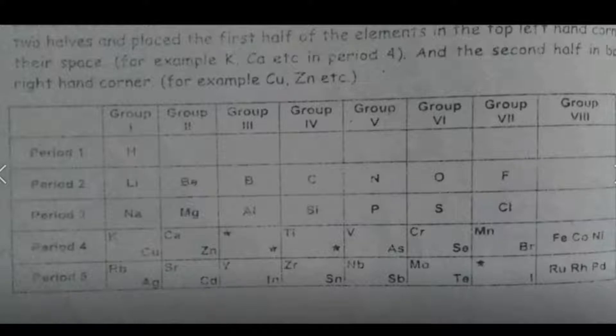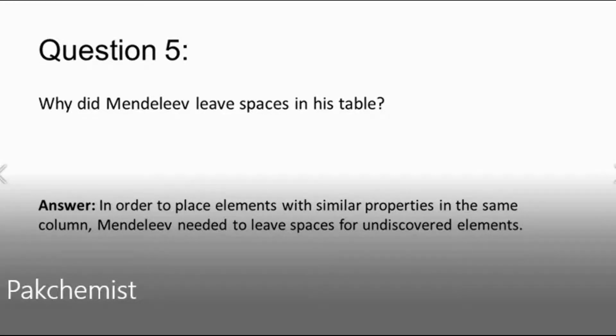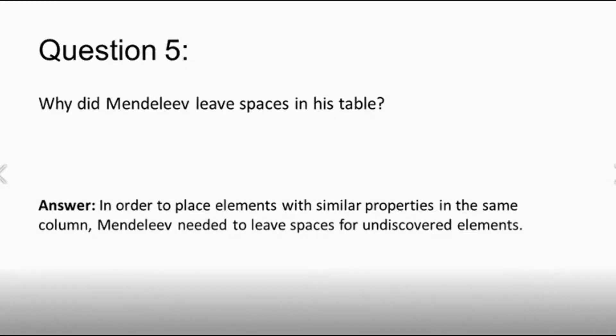यह है Mendeleev का table. Mendeleev table में कुछ spaces भी रखी गई थी. ये spaces क्यों रखी गई थी? Let's see the answer. In order to place elements with similar properties in the same column, Mendeleev needed to leave spaces for undiscovered elements because he knew later those elements would be discovered.